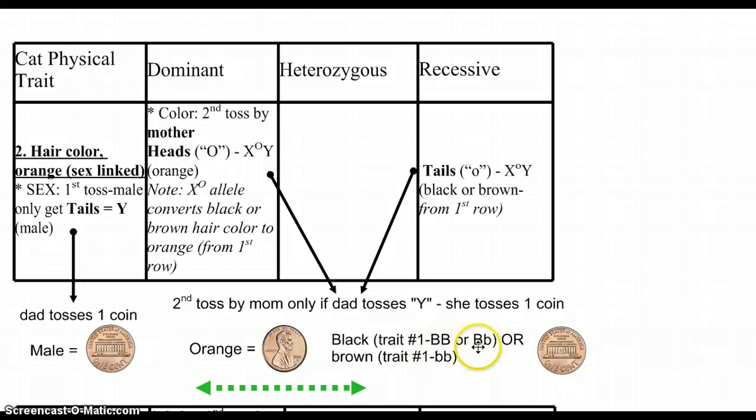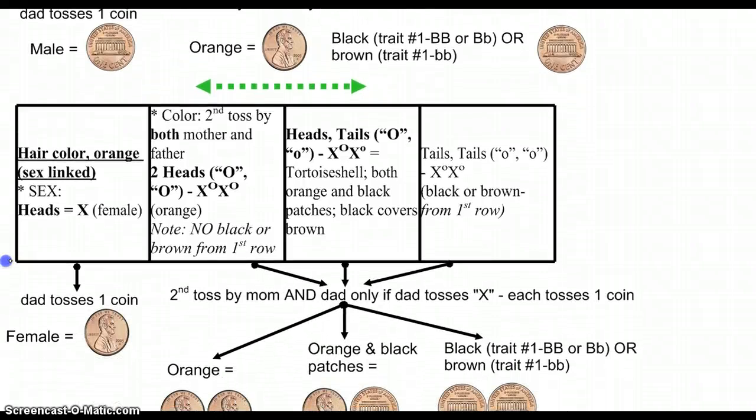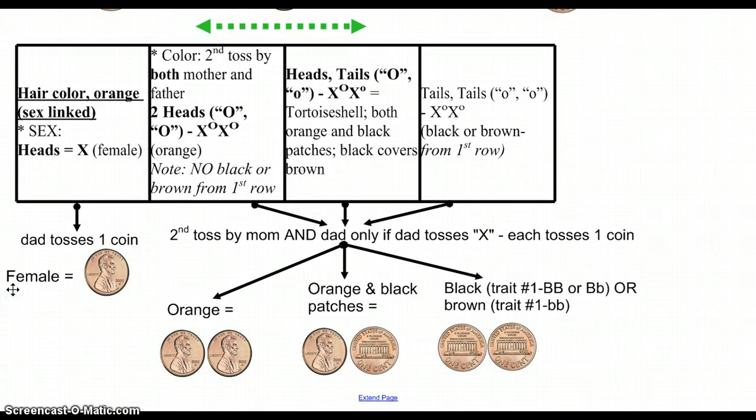Here's our combination that you would get black that would be covered up. If she also, mom throws a tail also, then my genotype is X, lowercase o, Y is from dad. I would then look at row one, and that would be the color of the kitten. So it would either be a black or brown kitten. I'd look in the upper row, and depending on what I got, if I got big B, big B, little B, then that kitten will be black. If in the first row, I got two little Bs, and that kitten will be brown.